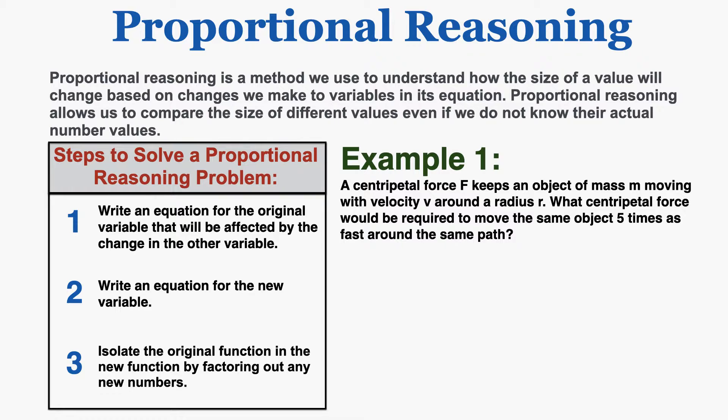There are three steps to solving a proportional reasoning problem, which I'll introduce as we go through the first problem. In example one, a centripetal force f keeps an object of mass m moving with velocity v around a radius r. What centripetal force would be required to move the same object five times as fast around the same path? I'll start by writing the equation for centripetal force: f equals mass times velocity squared over r, and I'm going to call that the original force — the force before we do anything different to the variables.